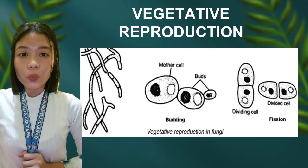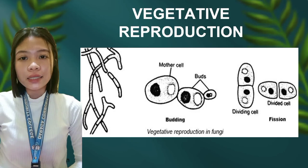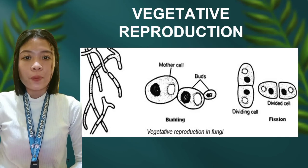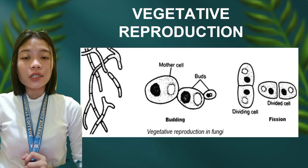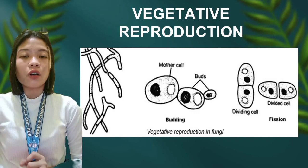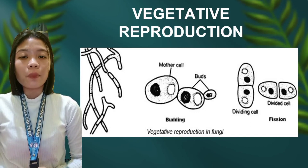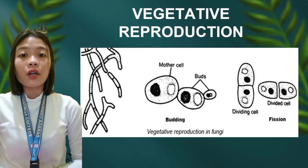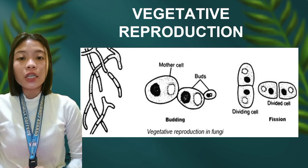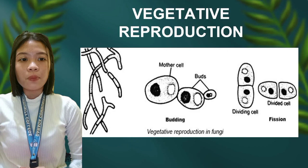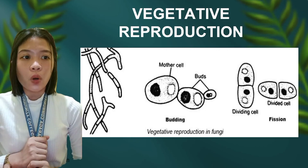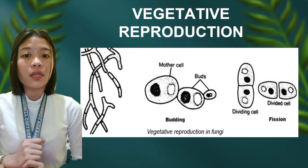There are two morphological stages: the vegetative and the reproductive. Although fragmentation, budding, and fission are processes of asexual reproduction in a number of fungi, the majority of fungi reproduce asexually by the formation of spores. Spores are reproduced in a variety of ways.